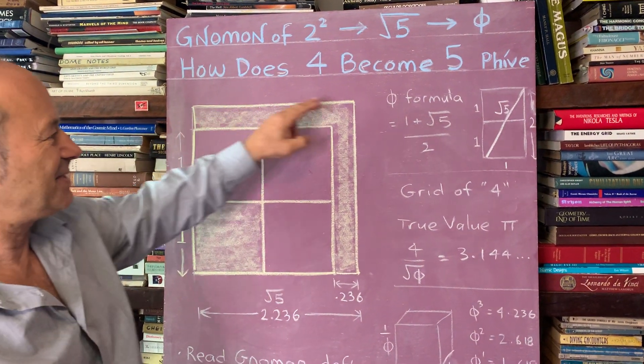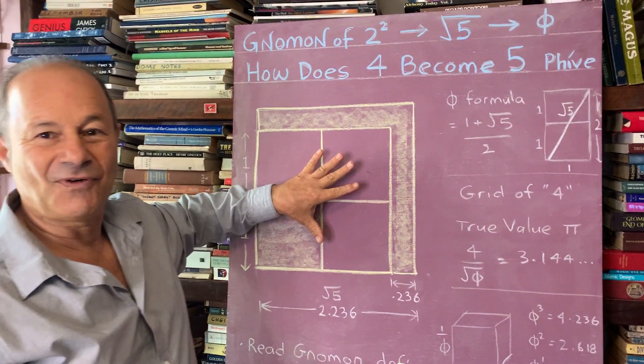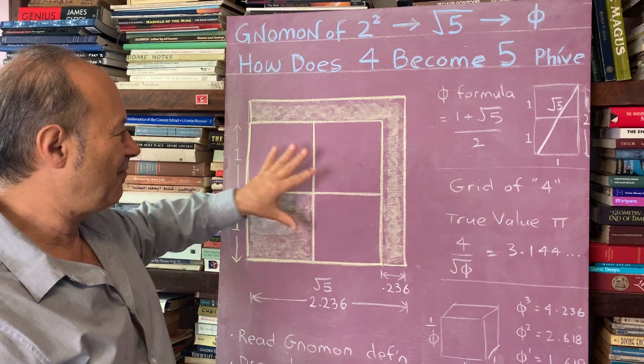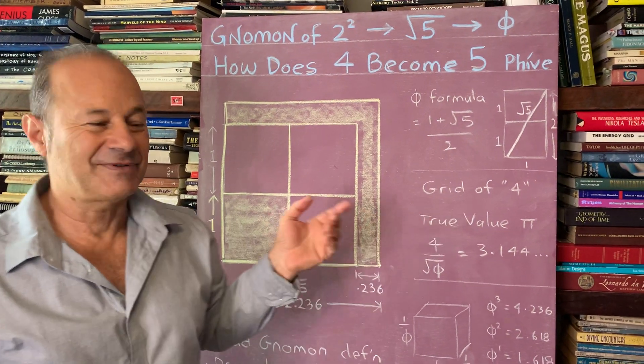This is really cosmic, because if this is 1 and this is 4, I've created 4 plus 1 is 5. That's all I've done.